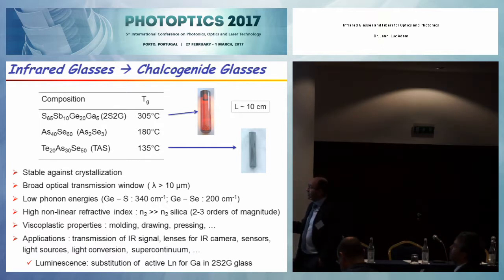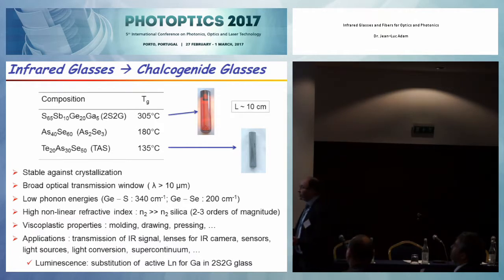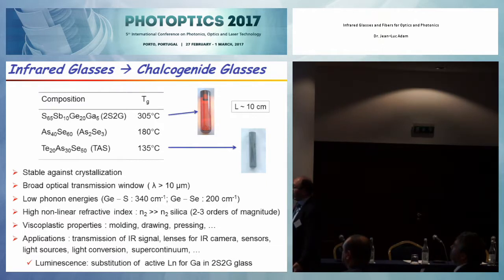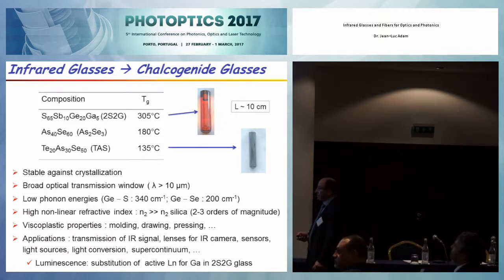Chalcogenide glasses are based on sulfur, selenium, or tellurium, or a combination of these three, with the association of nearby elements in the periodic table — typically antimony, germanium, gallium, and also arsenic.